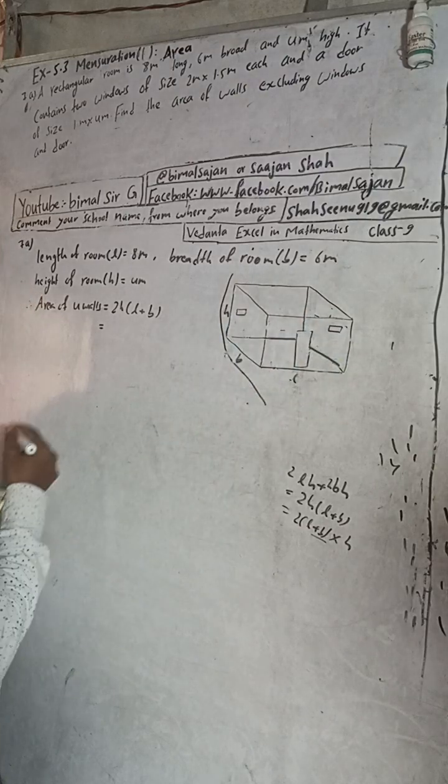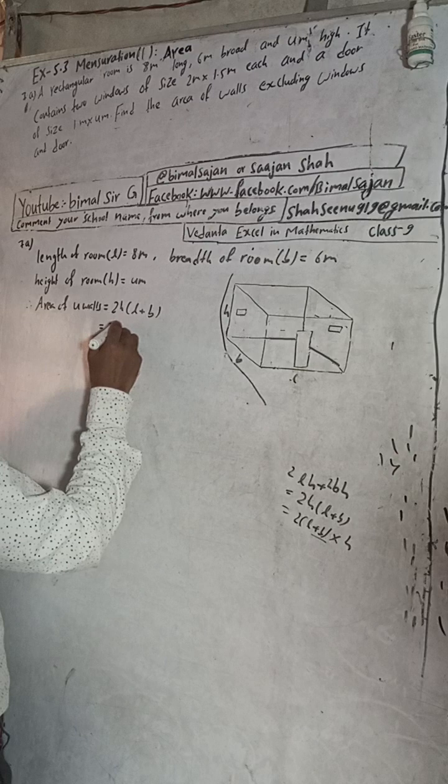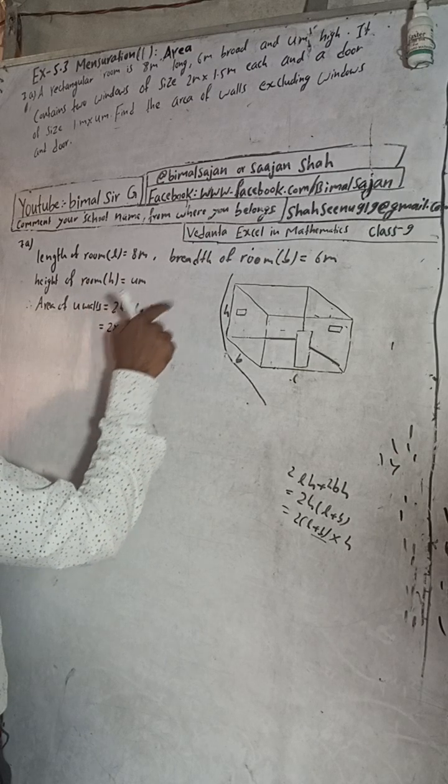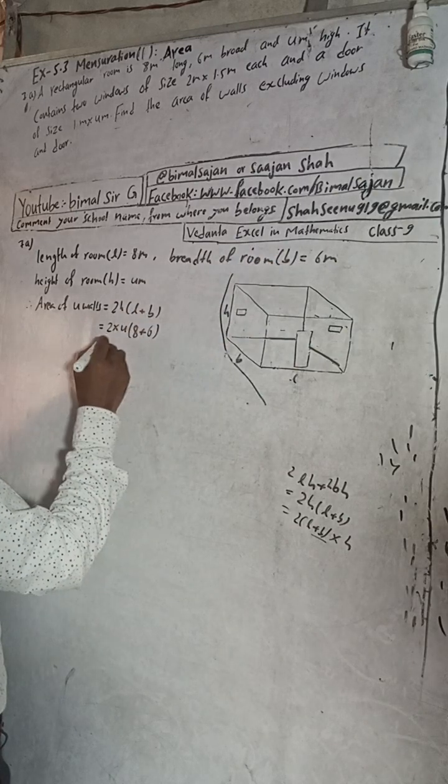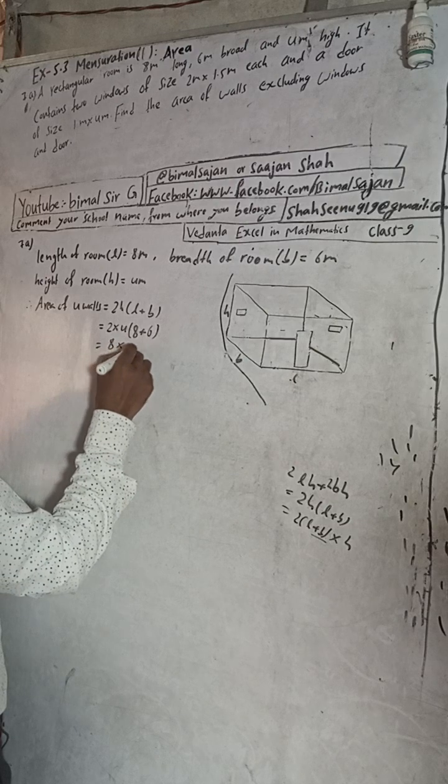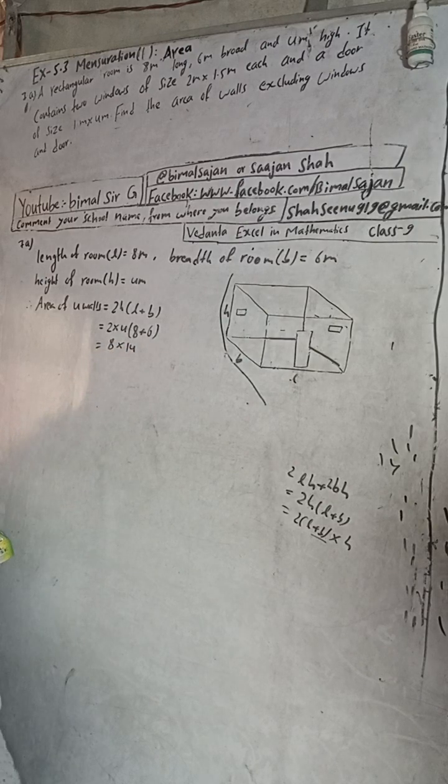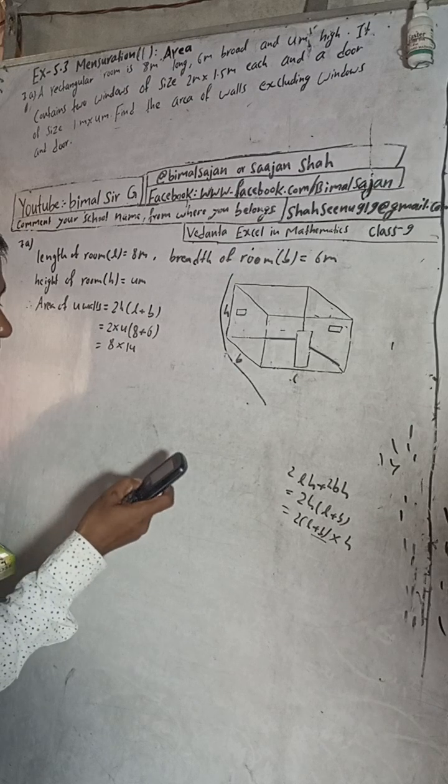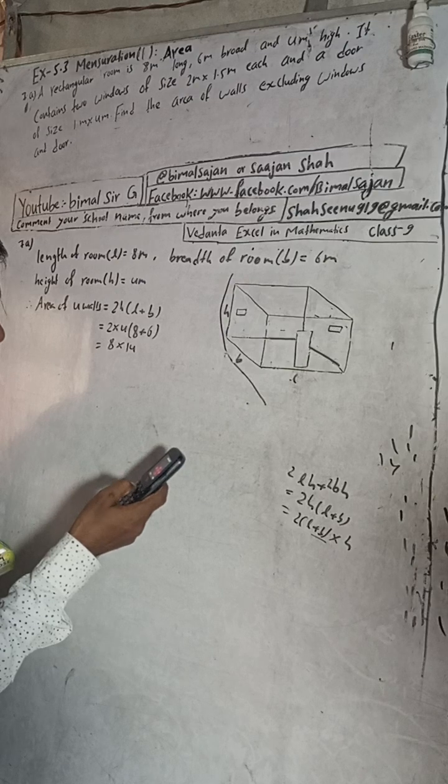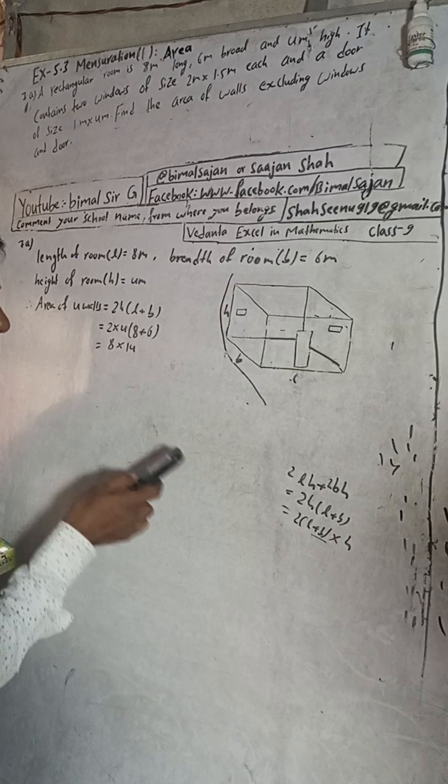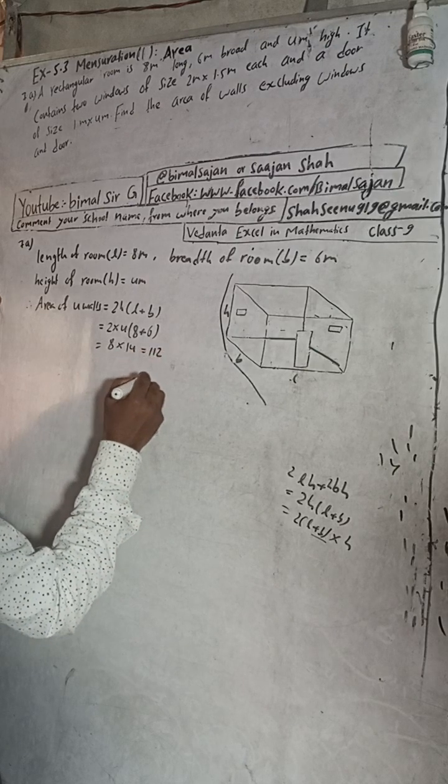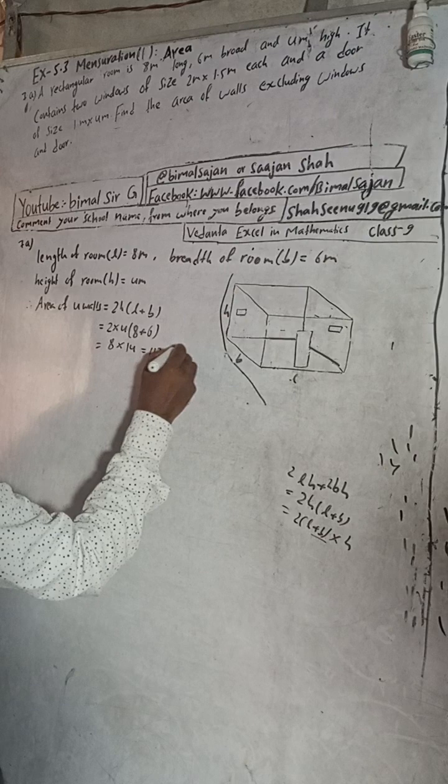Now put the value here. 2H, that means 2 times 4, L is 8 plus B is 6. So this is 2 times 4 times 8 plus 6 is 14, which equals 112 square meters. So this is area of four walls.